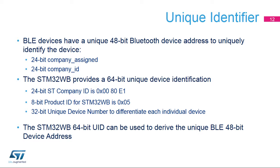The STM32WB provides a 64-bit unique device identifier based on the 24-bit ST Company ID, an 8-bit DORI device ID, and a 32-bit unique number. This STM32WB 64-bit unique device identifier can be used to derive the unique Bluetooth 48-bit device address, avoiding having to program the unique identifier in production.